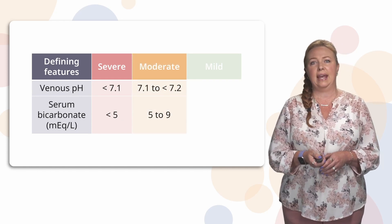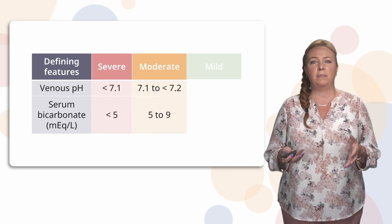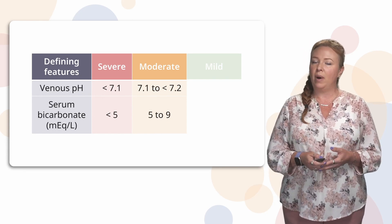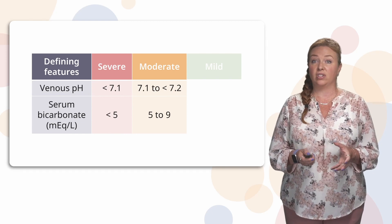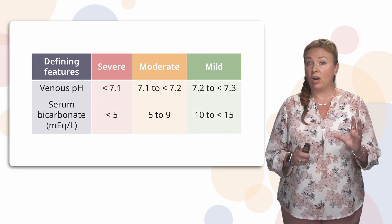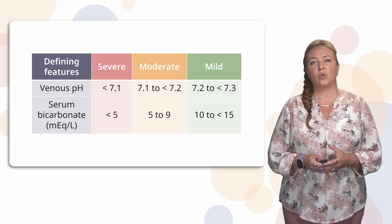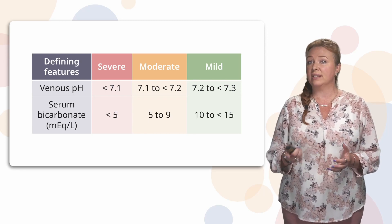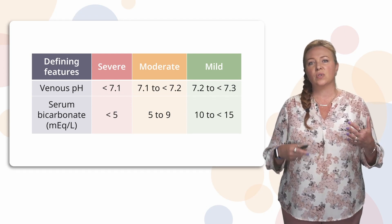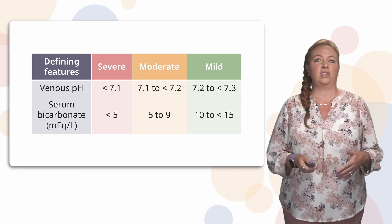Now a moderate DKA is anywhere from a pH of 7.1 to 7.2 and that serum bicarb is going to be from 5 to 9. The more mild version of DKA, maybe we caught it a little bit earlier, is going to be a pH of 7.2 to 7.3 and that bicarb is going to be a little bit higher, so it's going to be 10 to less than 15.